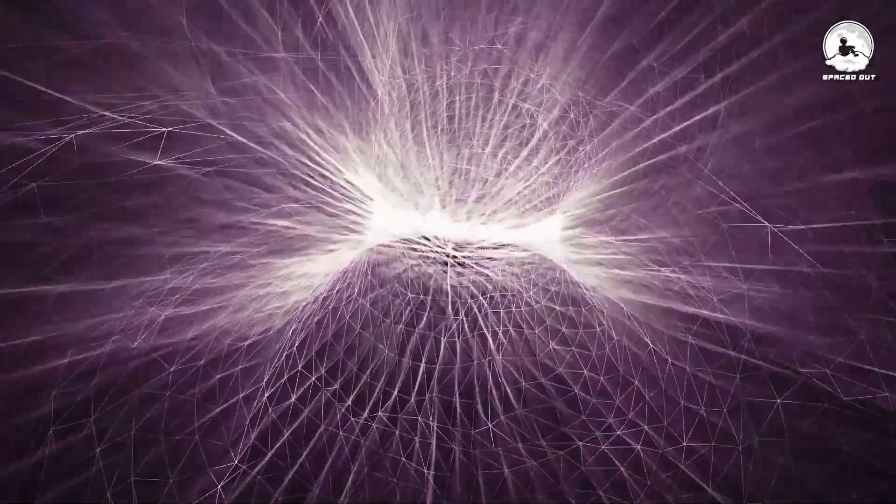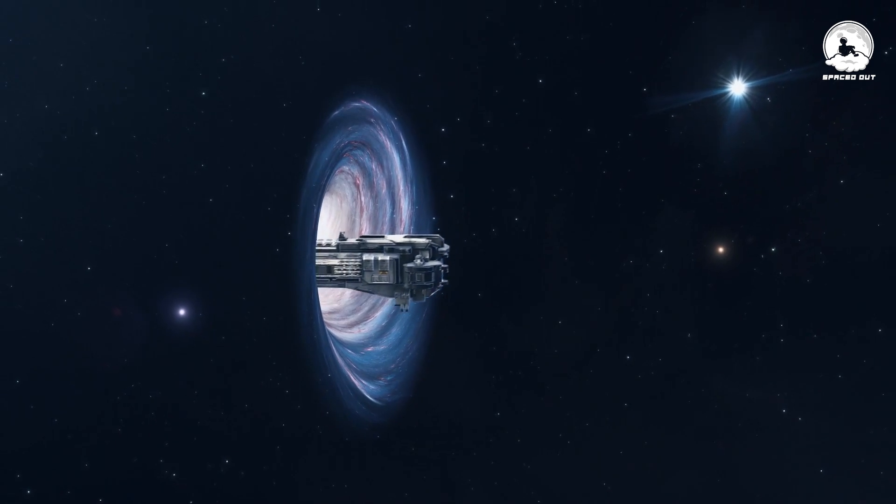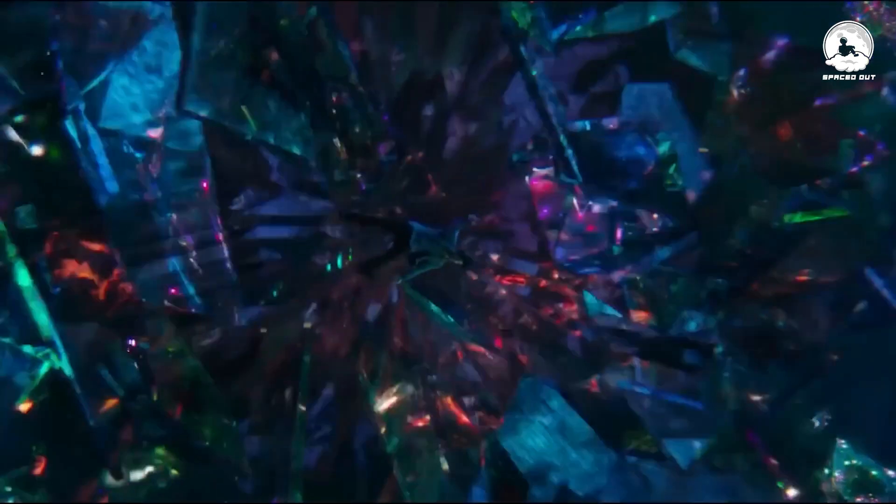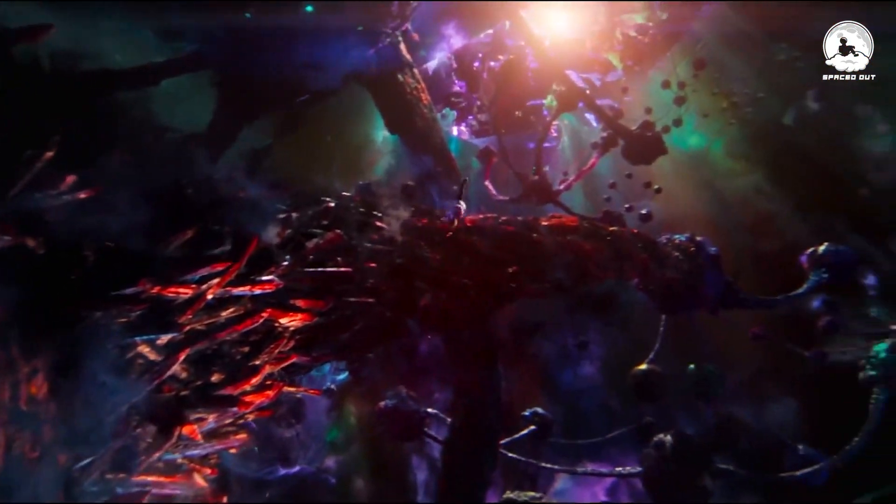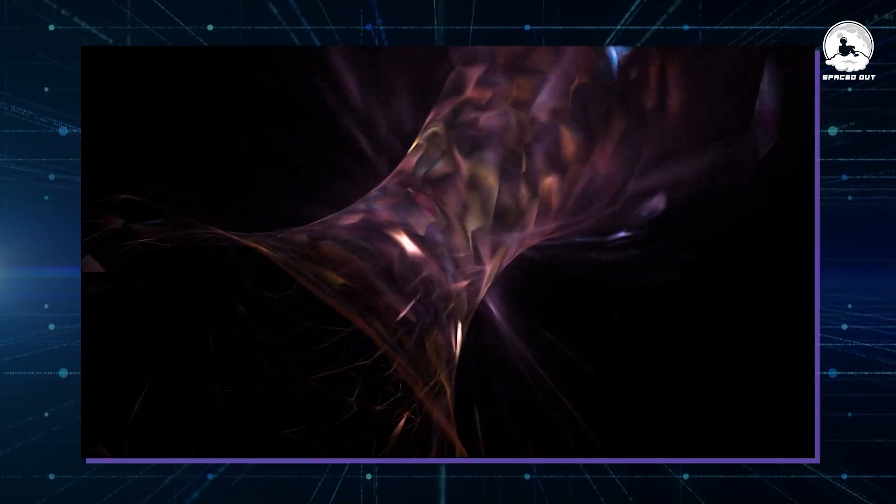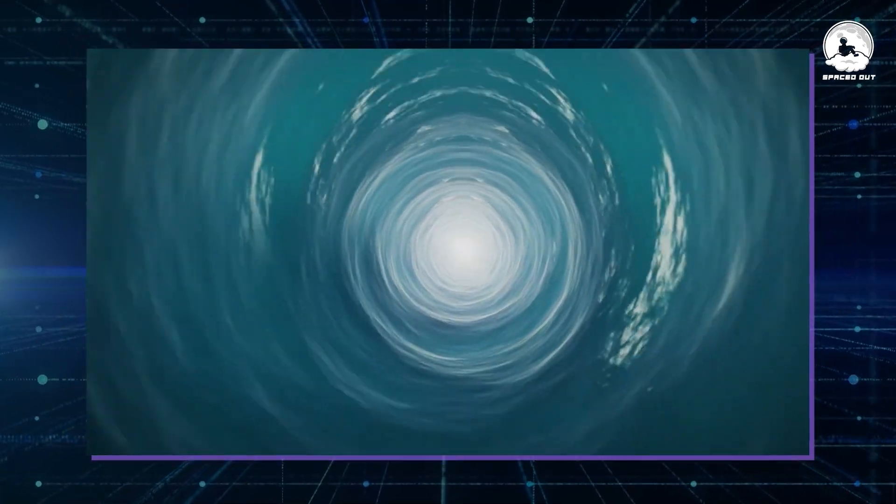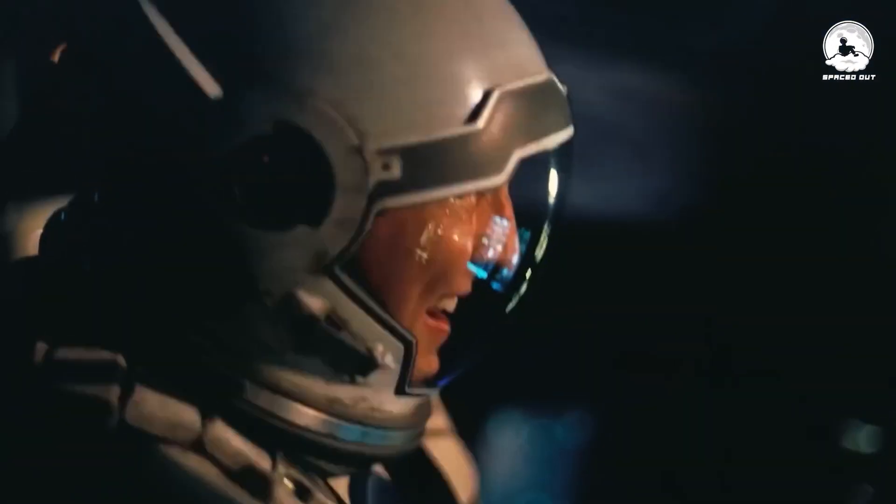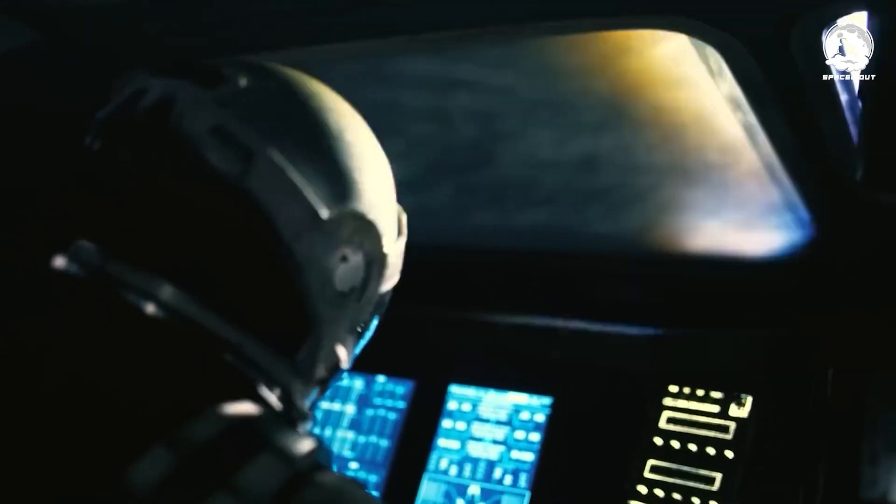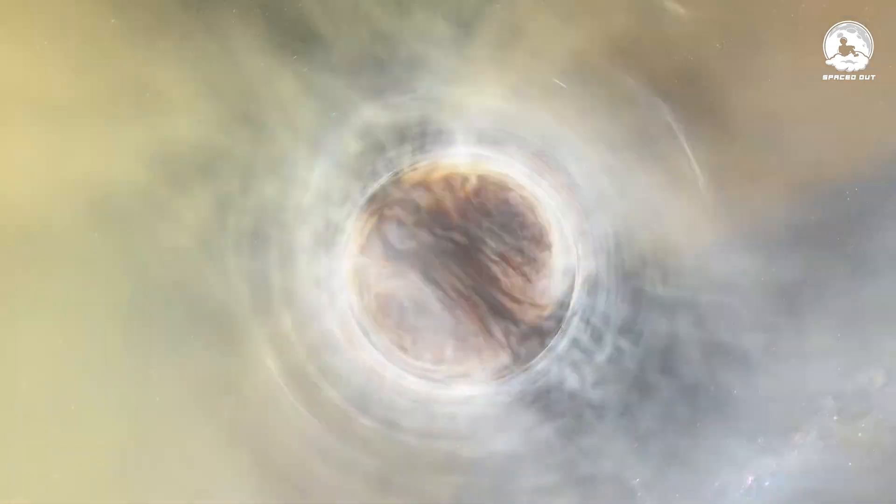Regrettably, Einstein-Rosen bridges, while fascinating, pose a significant practical challenge. They cannot be traversed in reality. Crossing over to the opposite universe would require an infinite amount of time, and these bridges crimp shut in the middle. Entering a black hole wouldn't lead to emerging from a white hole. Instead, it would result in an irreversible outcome, death. For humans to achieve rapid cosmic travel, a different type of wormhole is needed. A traversable wormhole.